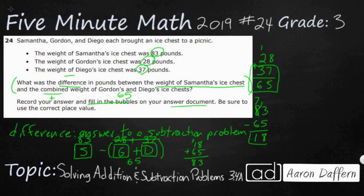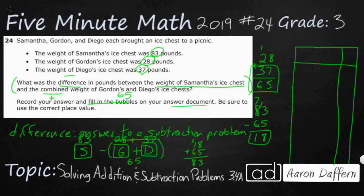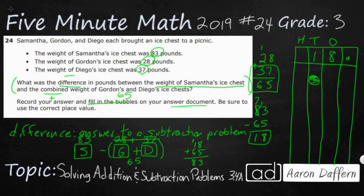So my answer is 18. How do I bubble it in? You'll get something with four columns, but the first column is just a decimal point. The remaining three columns are ones, tens, and hundreds. Write in 18 — one in the tens place, eight in the ones place. Don't scoot it over or it will be wrong. Find the bubble that says 1 and bubble it in, then find the bubble that says 8 and bubble that in. You can leave the hundreds place blank.